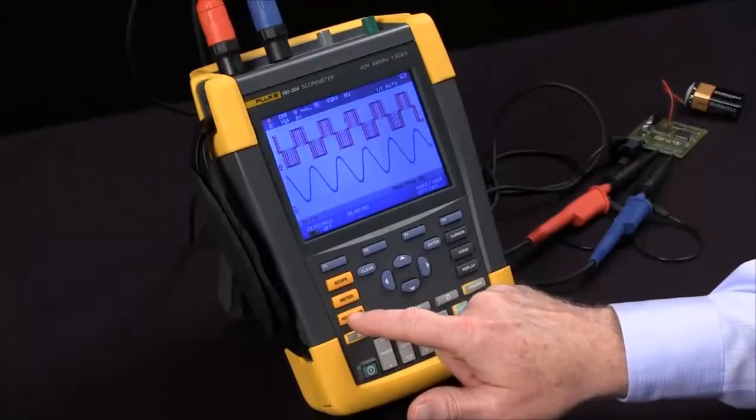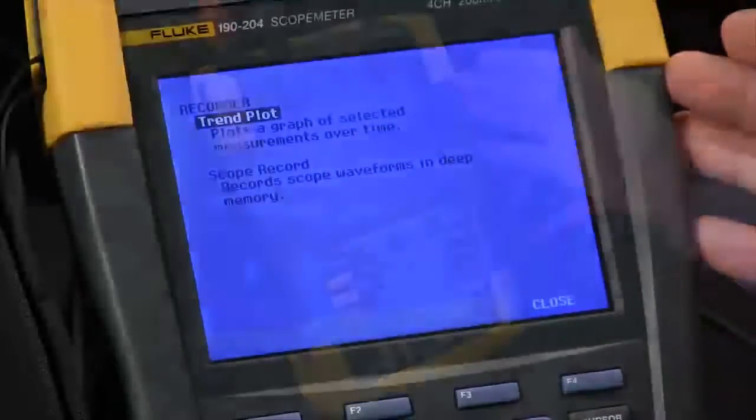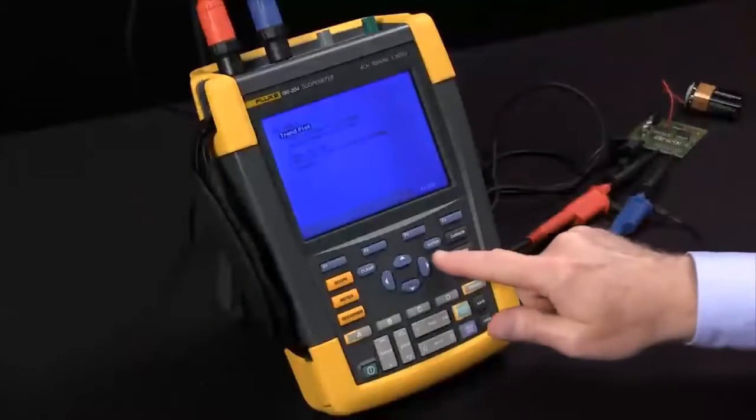We'll hit the recorder button for that. Trend plot will take those readings that we had highlighted and trend them. We'll simply hit the Enter key.